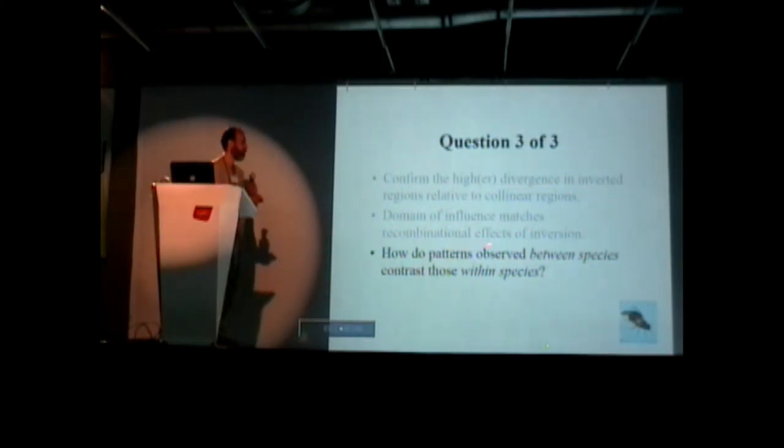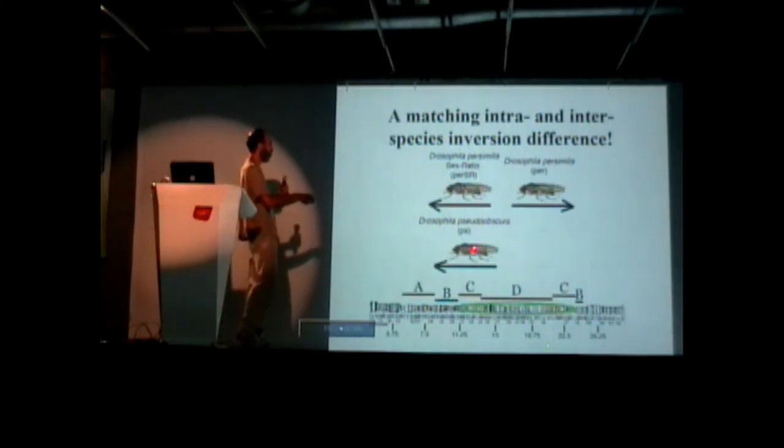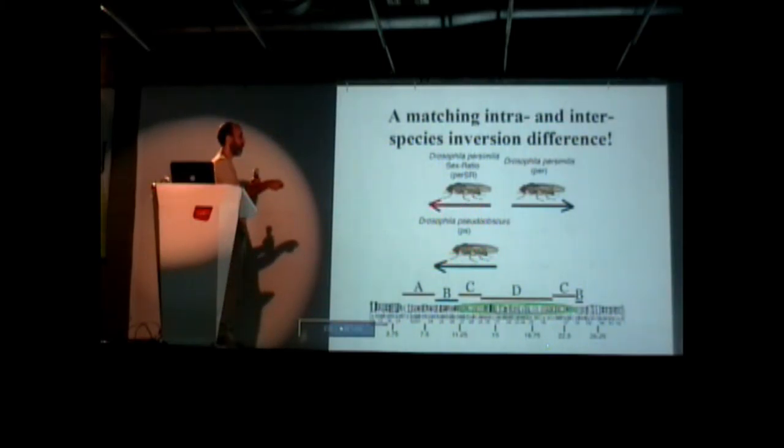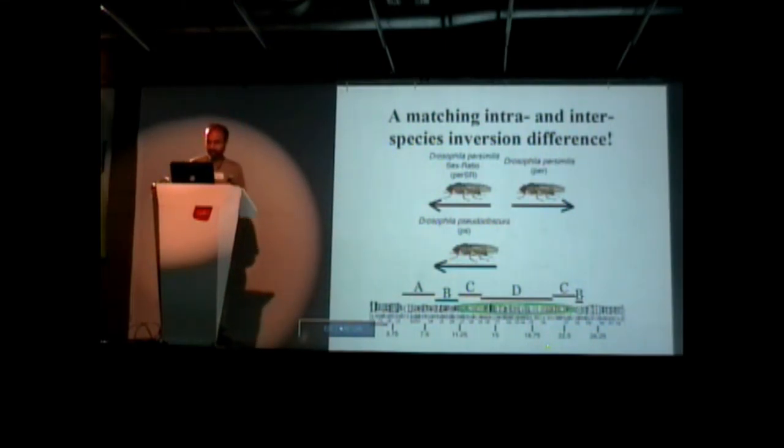So, you do see higher divergence in the inverted regions. The domain of influence matches the recombination effects of the inversion. How do the patterns observed between species differ from those observed within species? Now we actually have an interesting system to study. We have a matching intraspecies within species and interspecies between species inversion difference. The Drosophila pseudoobscura and these particular strains of persimilis called sex ratio have the same arrangement, the same inversion type. Whereas the normal persimilis differ. So we can compare persimilis to this inverted persimilis, where it's the same species but there's an inversion, or we can compare persimilis to pseudoobscura, where it's a different species but it's the same inversion.